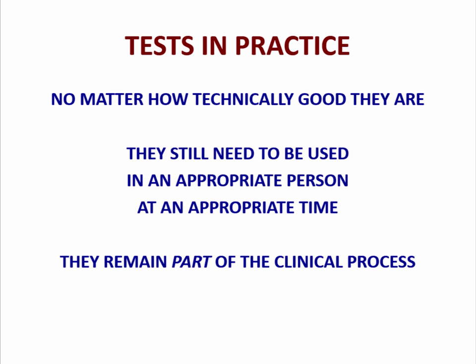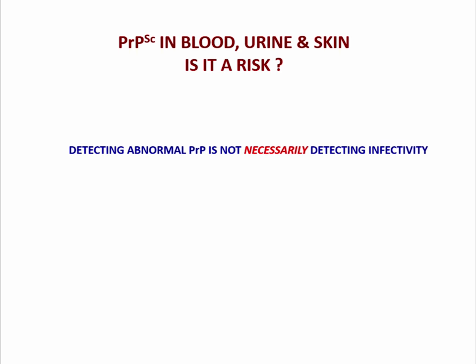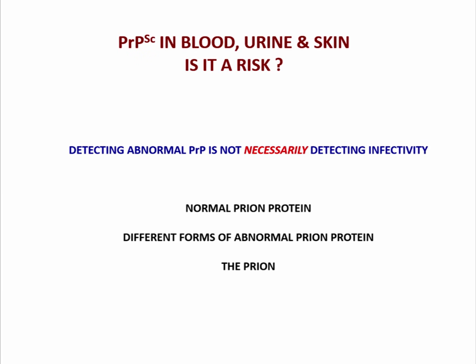One very important point: it doesn't matter how technically good any test is — they always need to be used in an appropriate person at an appropriate time, and they're always only part of the clinical process. Detecting abnormal PRP is not necessarily detecting infectivity. You cannot equate abnormal PRPSC with infectivity in a simple manner. There is normal PRP that we're all making in our bodies, abnormal PRP which occurs in different forms, and then there's the infectious agent — and these things are not the same.